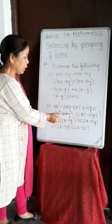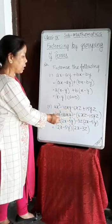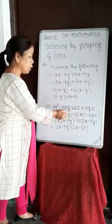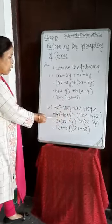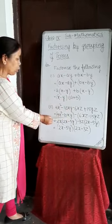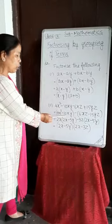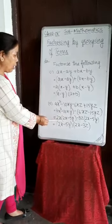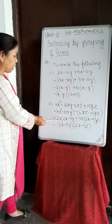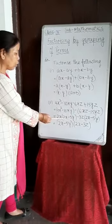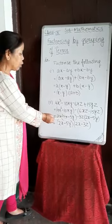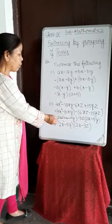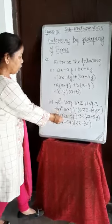In the second group, a minus sign is present, and if we take minus common, the plus sign changes to minus, because minus times minus is plus. In the first group, 2X is common — 4 and 10 are both divisible by 2 and X is common — so we take out 2X. Dividing 4X squared by 2X gives 2X, and dividing 10XY by 2X gives 5Y, so the bracket contains 2X minus 5Y.